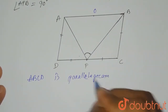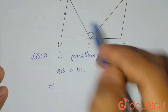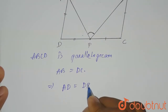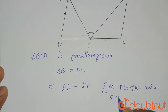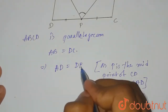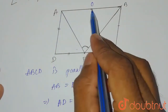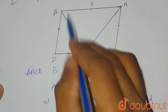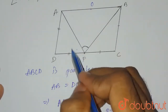In this parallelogram, AB equals DC, which implies that AD equals DP. This is because P is the midpoint of CD and AB equals 2AD — both statements together confirm that AD equals DP. Since AD is half of AB and half of DC, we get AD equals DP.